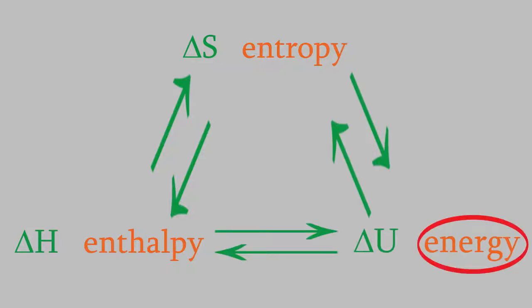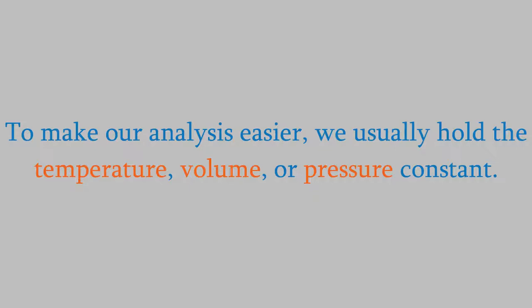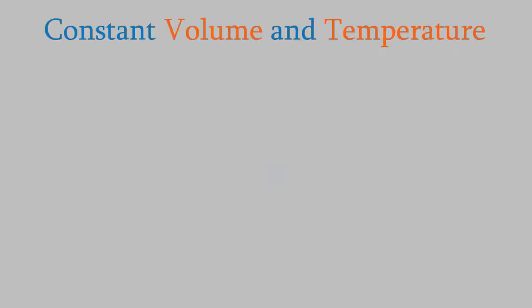As we've seen several times before, it's easiest to study a system if we hold one or more properties of the system constant. This helps us to concentrate on the properties that we're most interested in, like the energy or the entropy. Usually, the properties that we hold constant will be the temperature, volume, or pressure. So to start, let's think about a system where the temperature and volume are both constant.